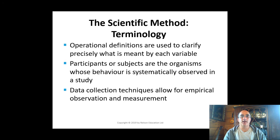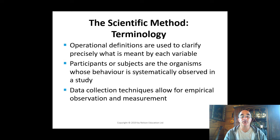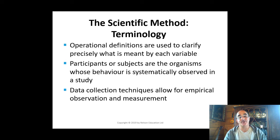Let's look at some terminology used in the scientific method. Psychologists use operational definitions to clarify what their variables mean. Researchers use procedures for making empirical observations and measurements. These include direct observations, questionnaires, interviews, recording and transcribing questions, and administering psychological tests like IQ or other comprehension tests.